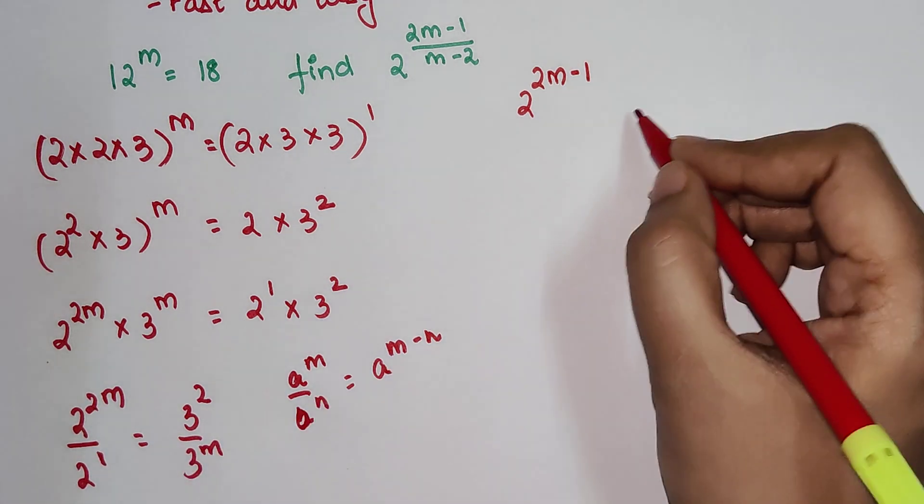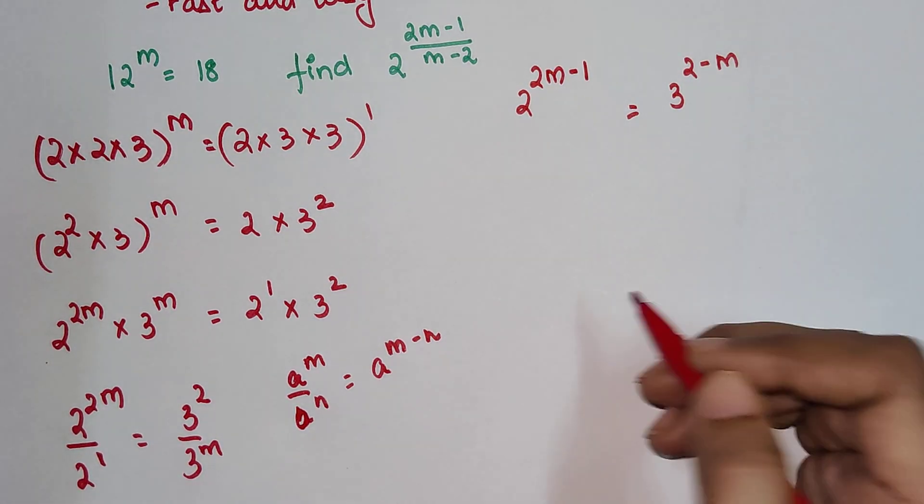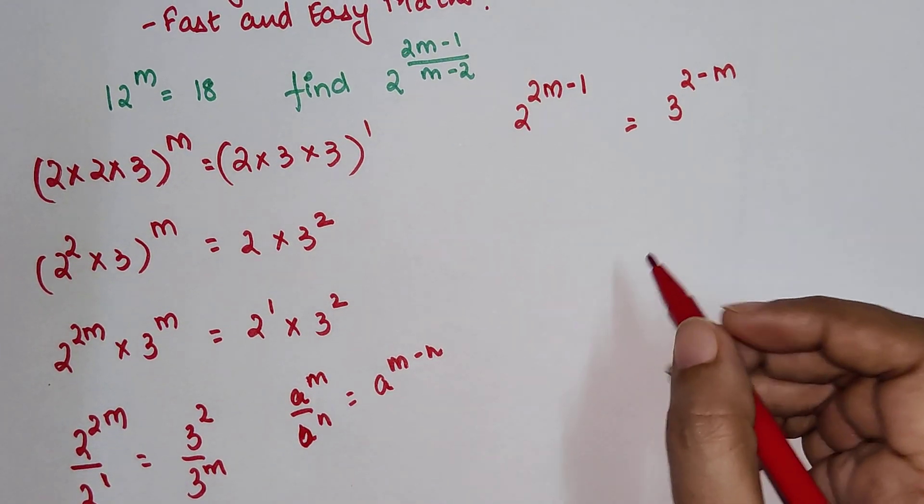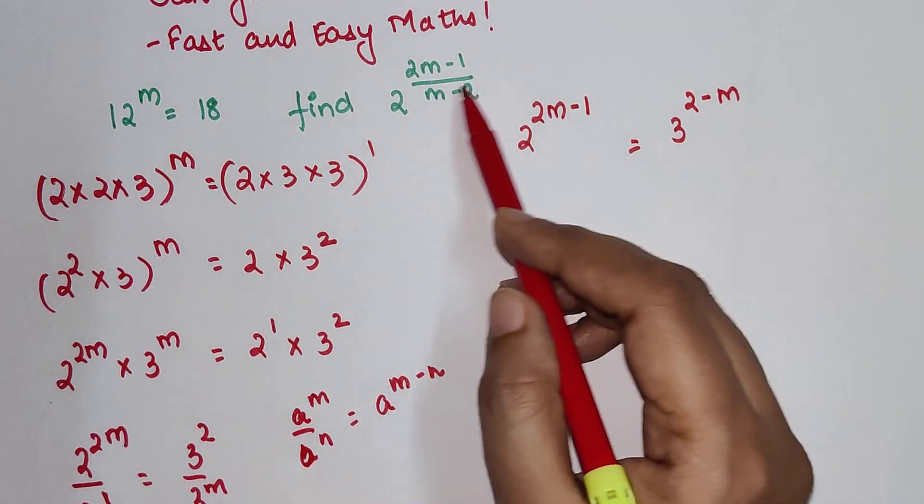This equals 3 raised to 2 minus m. Now if you look closely, we have got the numerator part of our fraction.